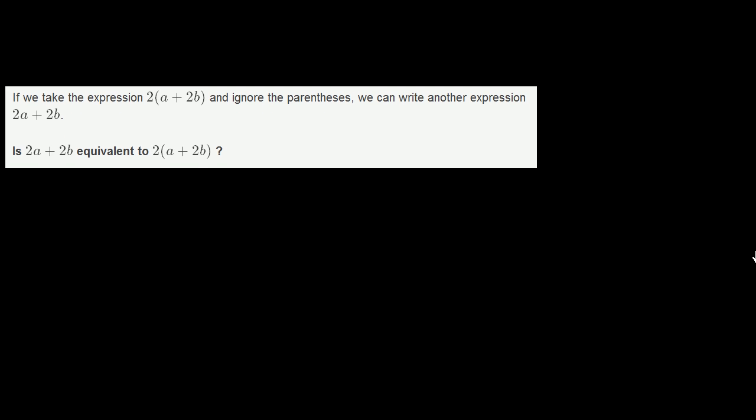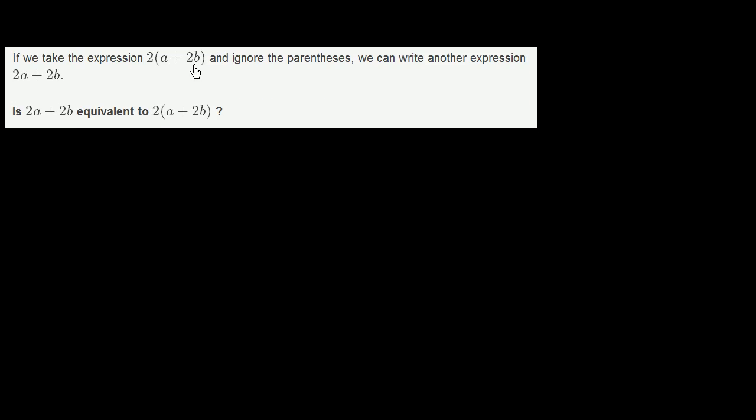If we take the expression 2 times a plus 2b in parentheses and ignore the parentheses, we can write another expression 2a plus 2b. Is 2a plus 2b equivalent to 2 times a plus 2b in parentheses? So when they're saying all of this thing over here, they're saying, hey, look, I'm just this irresponsible mathematician and I like to just ignore parentheses without thinking about it fully. And if I did, I would just get 2a plus 2b. Can I do this? And you might have already imagined, based on the tone of my voice, what the answer is. And to think about it, you just have to realize, well, look, you're multiplying 2 not just times the a, you're multiplying 2 times the entire quantity a plus 2b.